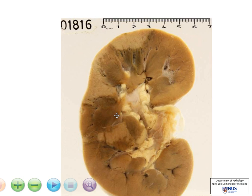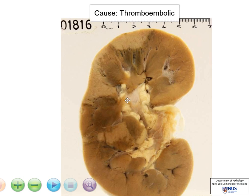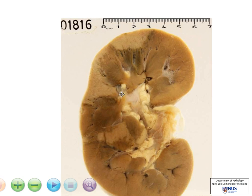The commonest cause in this instance is usually thromboembolic phenomena going into the branches of the renal arteries, therefore causing occlusion and this wedge-shaped area of coagulative necrosis.